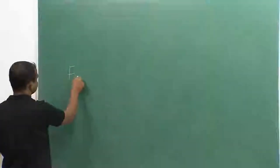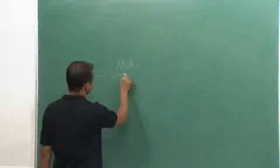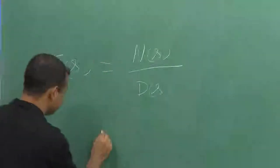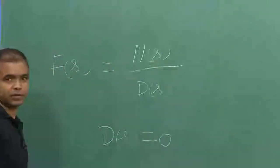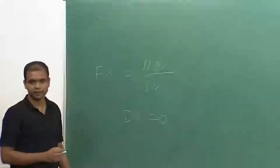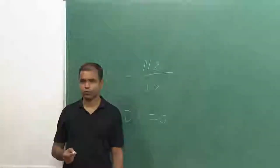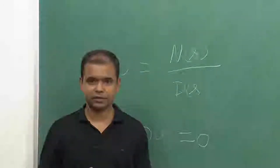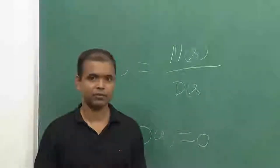If we have a system with the transfer function F(s) equal to N(s) divided by D(s), and if I equate D(s) with zero, this I call the characteristic equation of the transfer function, and the roots of this equation are known as the poles of the transfer function. For a system to be stable, the poles of this transfer function must lie in the left half of the s-plane.